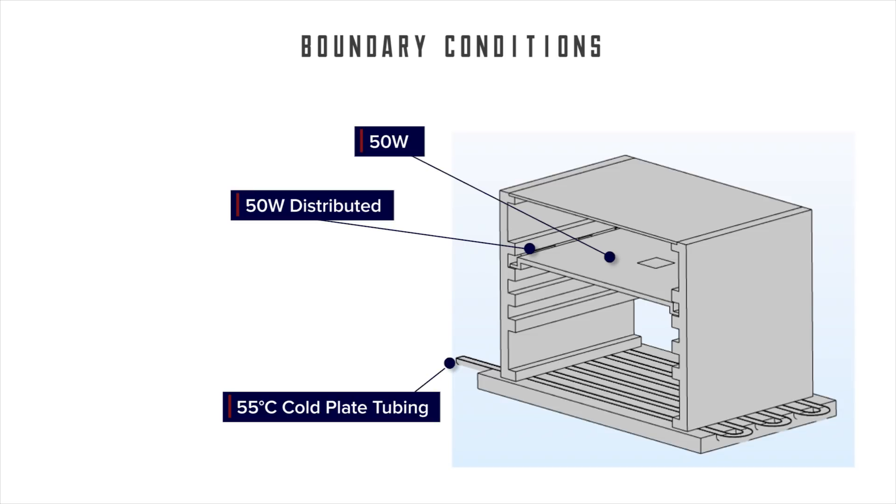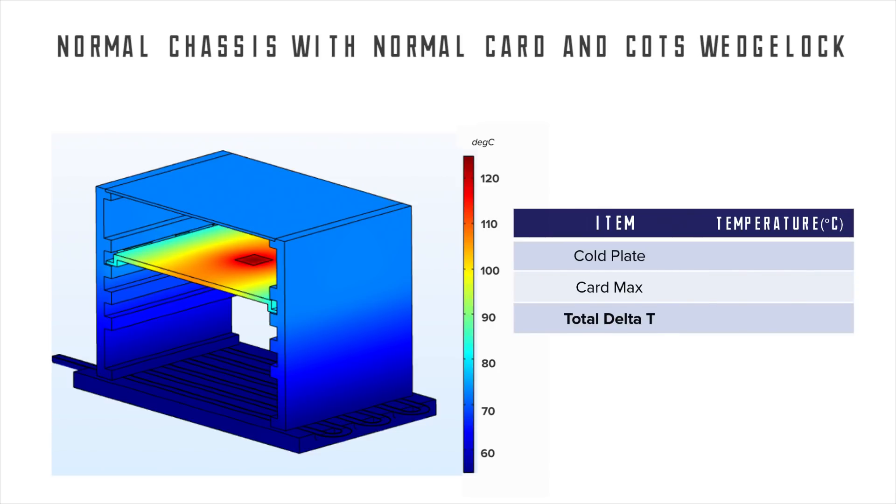In the baseline example, we are assuming all components are aluminum and the wedge lock is an off-the-shelf design. As we analyze the base model, you'll notice significant temperature rise from the cold plate to the max card temperature. The total delta T is 69 degrees C. In most cases, that delta T is not suitable for successful operation.